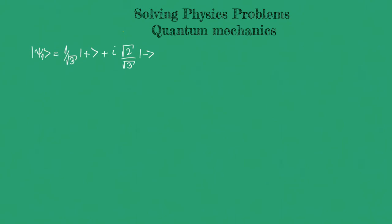What would be a normalized quantum state that is orthogonal to it? I'll define a general quantum state |φ₁⟩ = a|+⟩ + b|−⟩, and impose the orthogonality condition: ⟨ψ₁|φ₁⟩ = 0.